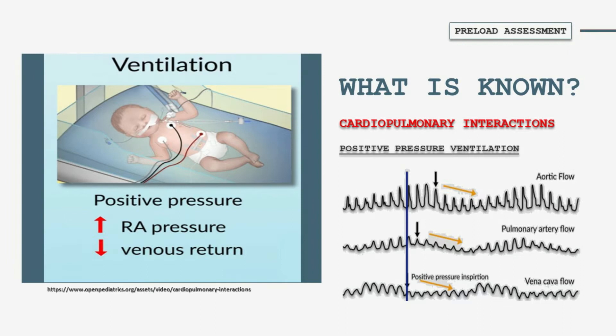This diagram shows aortic flow, pulmonary artery flow, and vena cava flow. As you can see, on initiation of positive pressure ventilation, all of these go down because all of what was said before is now the opposite relationship. Therefore, when a positive pressure is introduced into the thorax, the right atrial pressure is increased, and it is going to be harder for that venous return to come in.